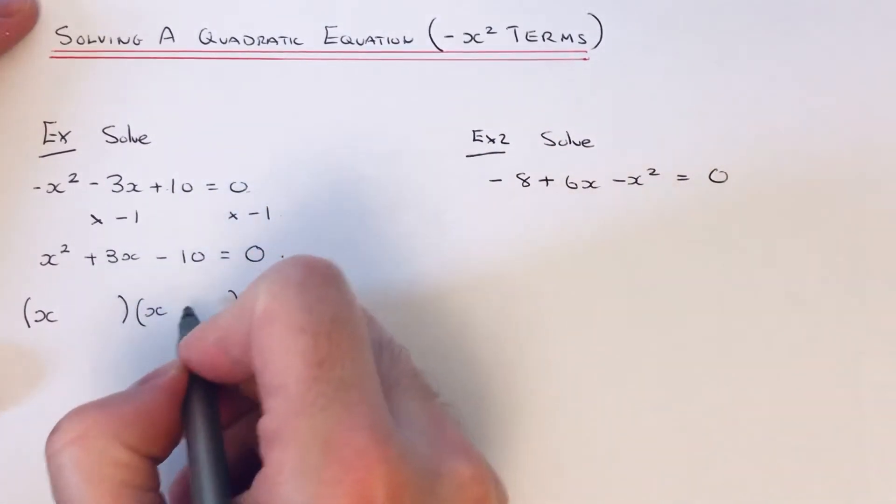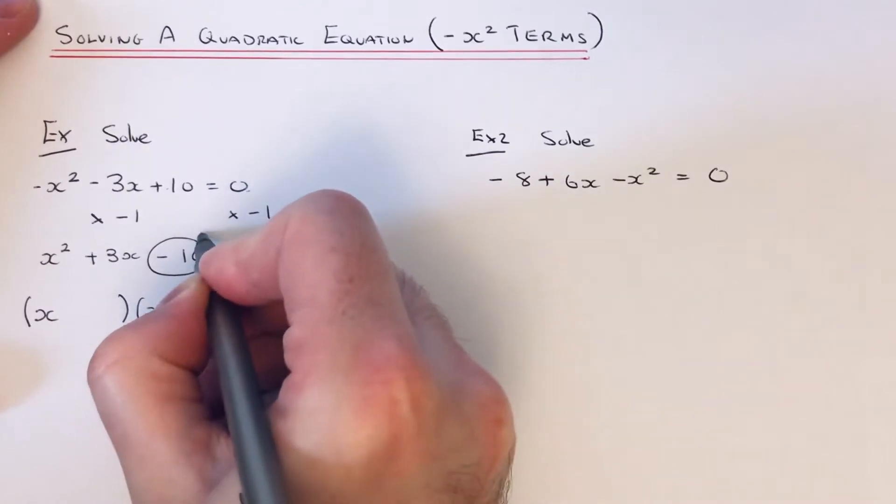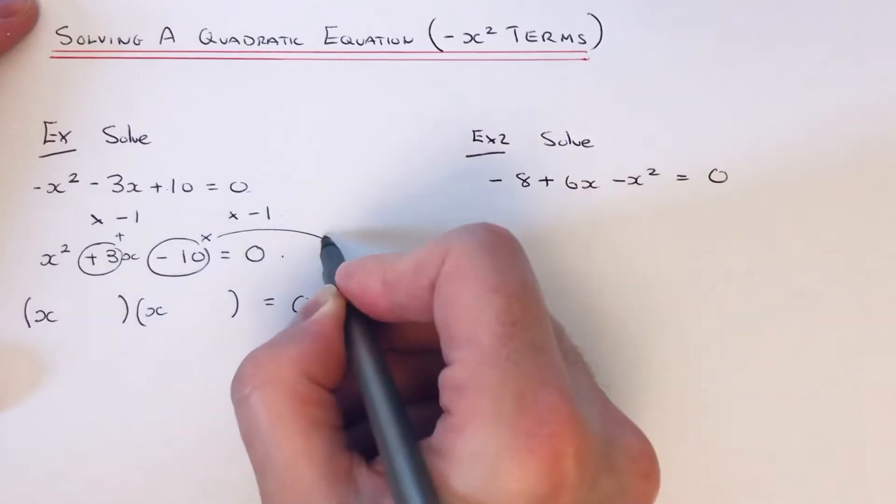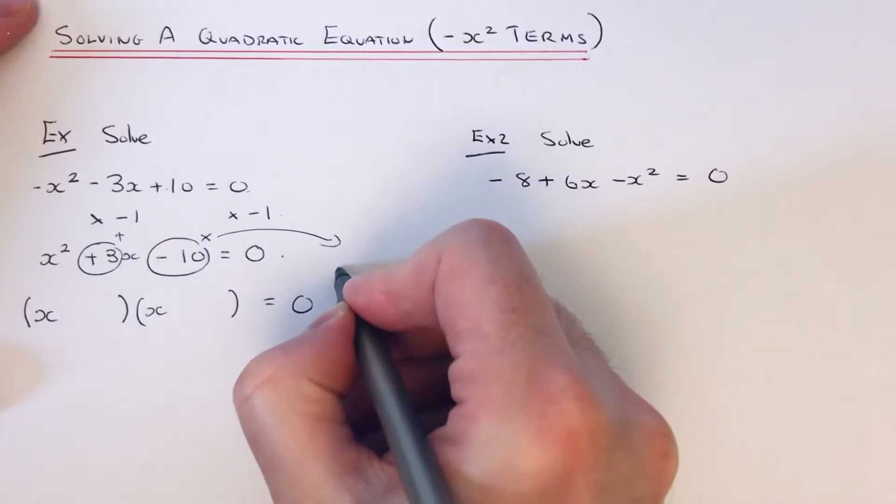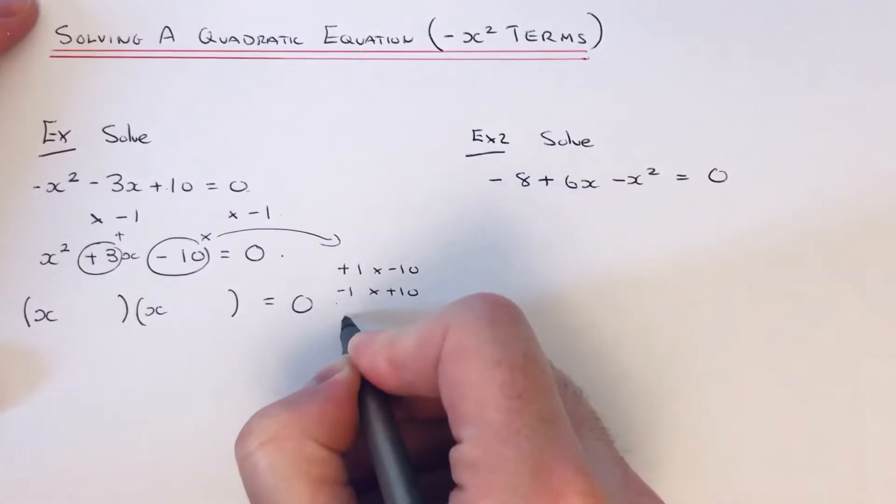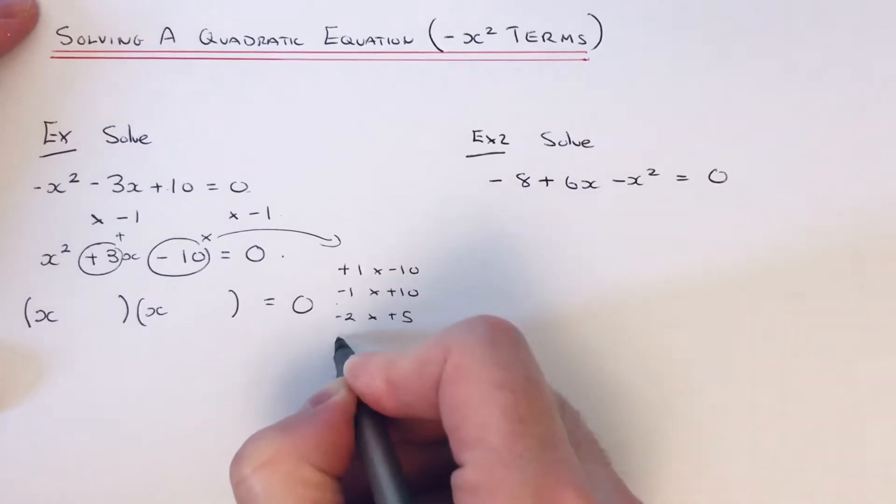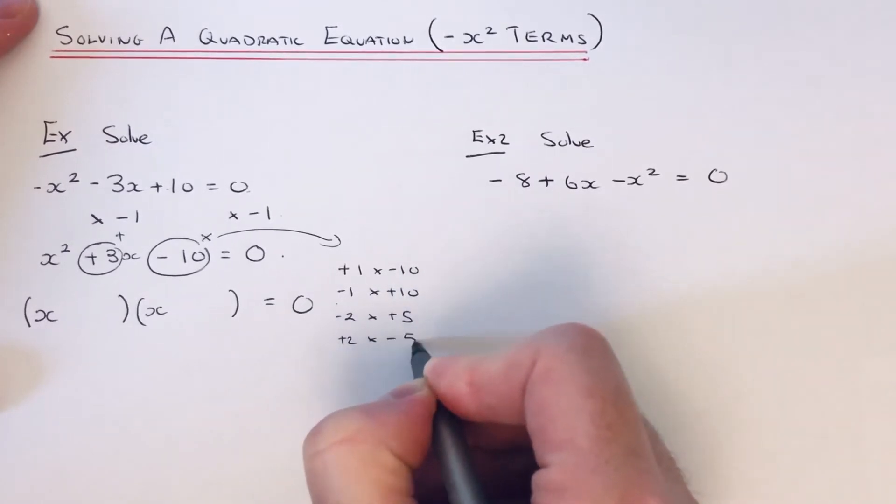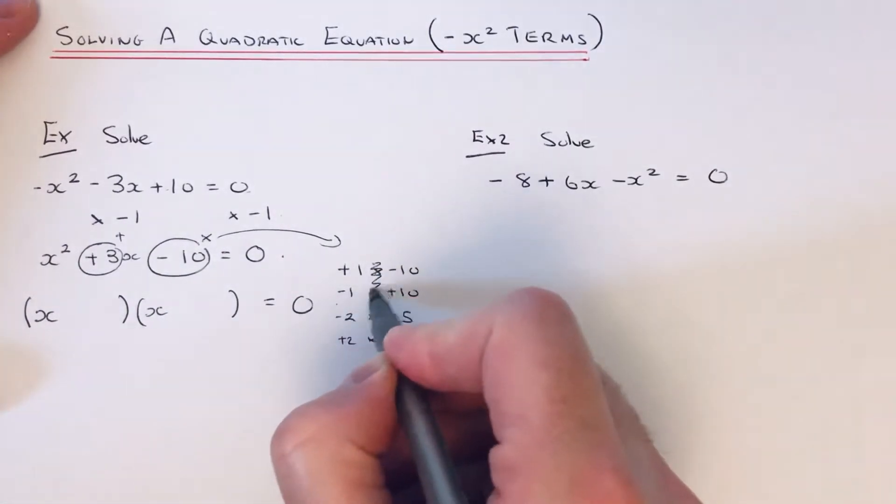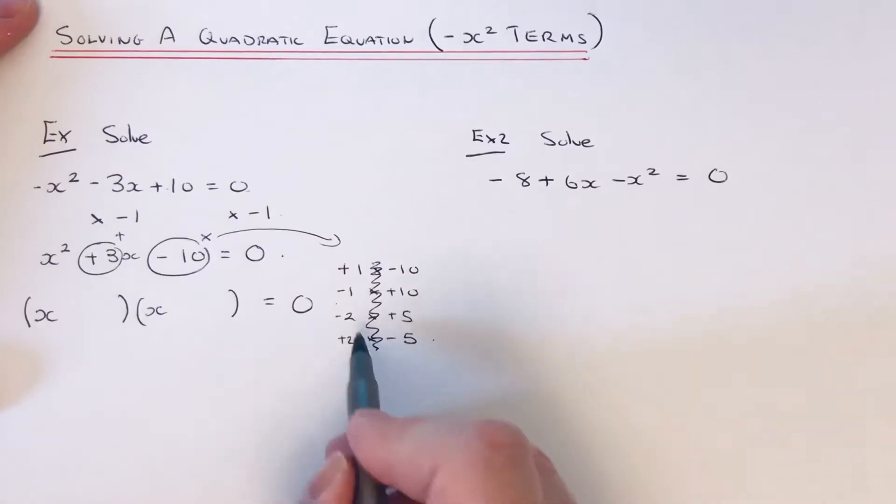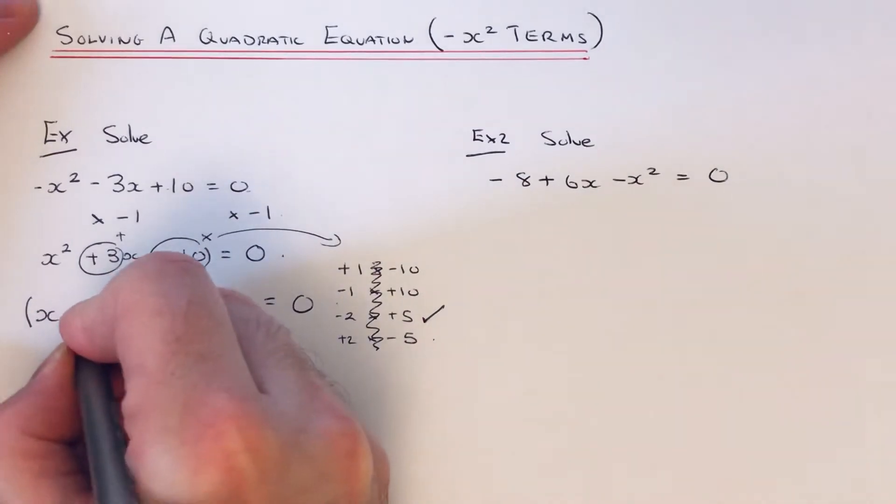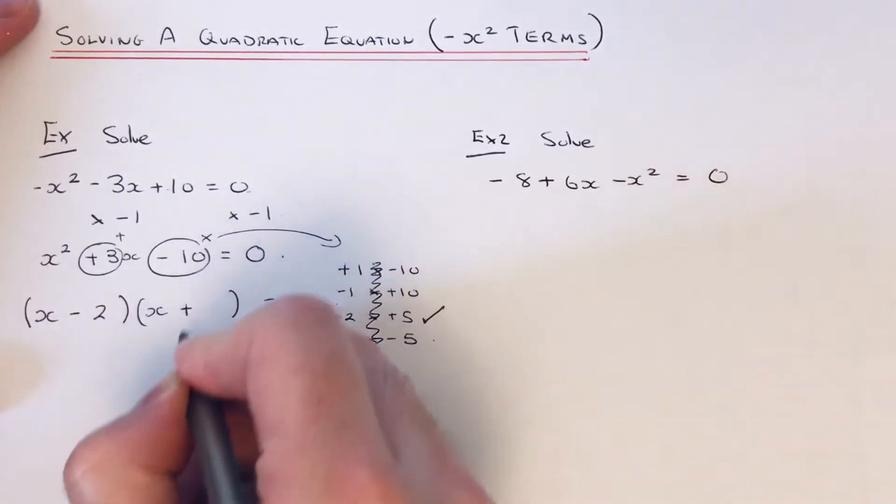So we need to now find the pair of numbers which multiply to give us minus 10 and add to give us plus 3. So let's write all the numbers down that multiply to give us minus 10. So we've got 1 times minus 10, minus 1 times plus 10, minus 2 times plus 5, and 2 times minus 5. So we just need to find the pair of numbers which add to give us plus 3. So that would be the third one down, minus 2 add 5, that's plus 3. So if we fill those in the brackets.